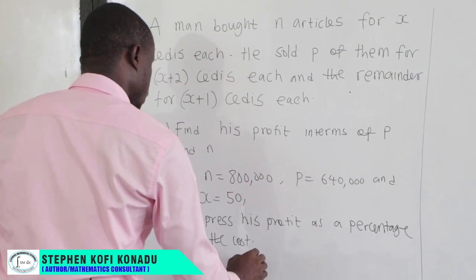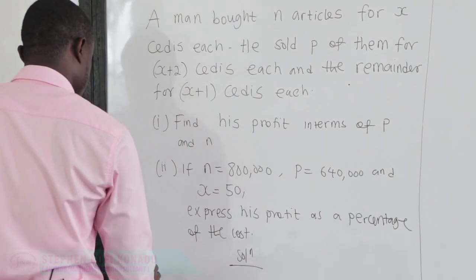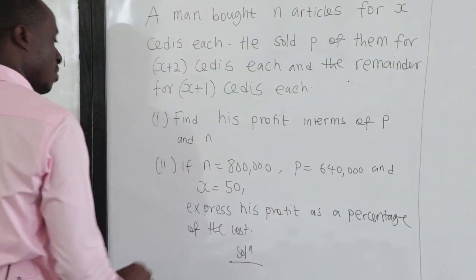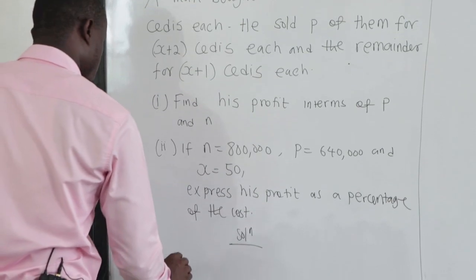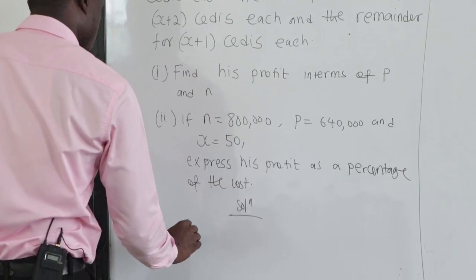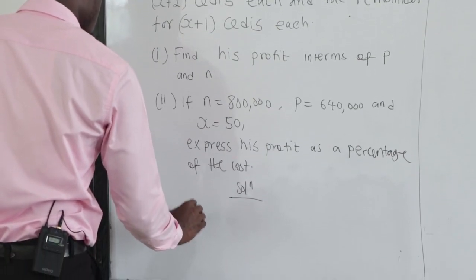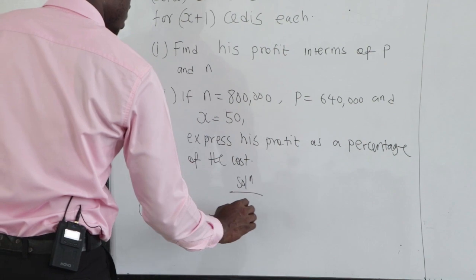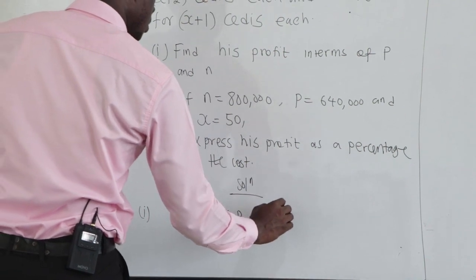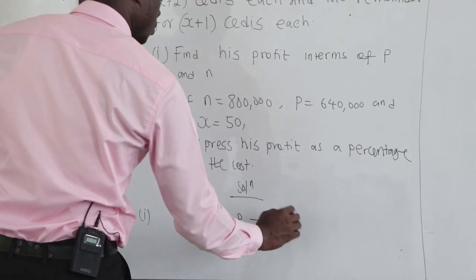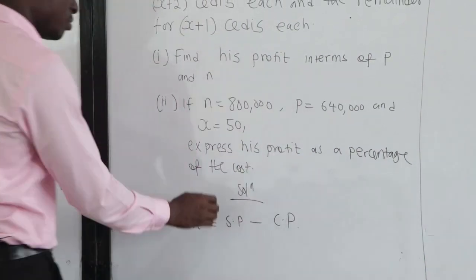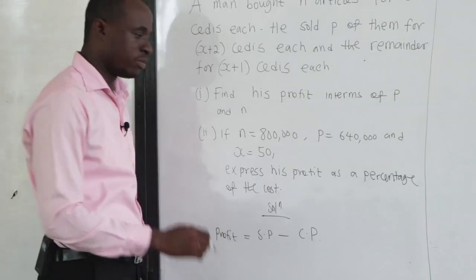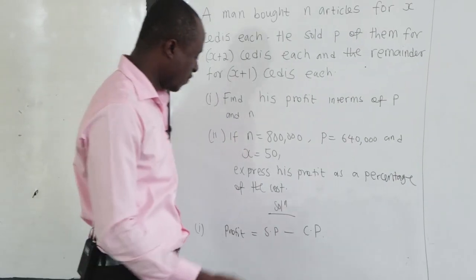The first part is asking us to find the profit. We know profit — what is profit? Profit is selling price minus cost price, or total selling price minus the total cost price.